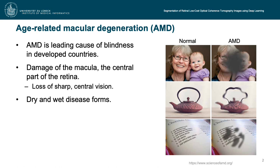Age-related macular degeneration, abbreviated AMD, is the leading cause of blindness in developed countries. AMD damages the macula lutea, which is the central part of the retina and contains the highest density of rods. Thus, damage causes loss of central and sharp vision, which is important for everyday life.